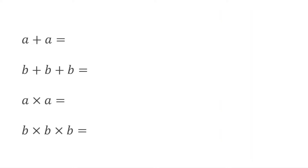When we add terms, we're actually affecting the coefficient — the number that goes in front. For example, a plus a would simply be two lots of a, so 2a. Similarly, b plus b plus b — we're affecting the coefficient in front of the b. We've got three lots of b, so b plus b plus b is simply 3b.